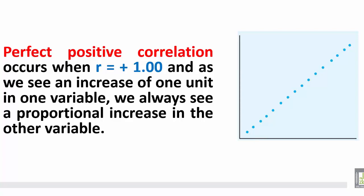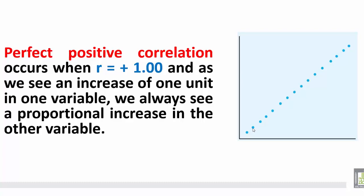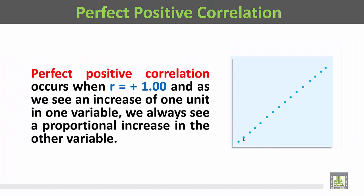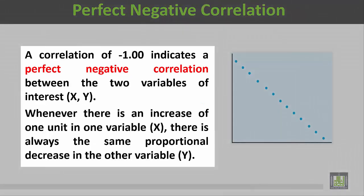This is the perfect negative correlation between the two variables X and Y. Whenever there is an increase of one unit in one variable X, there is always the same proportional decrease in the other variable.